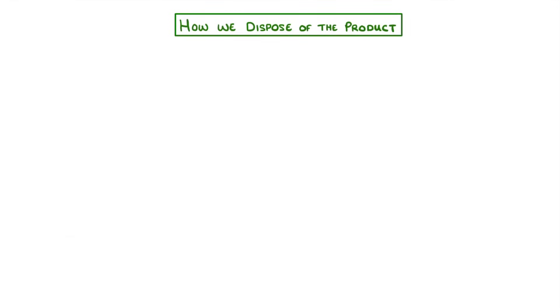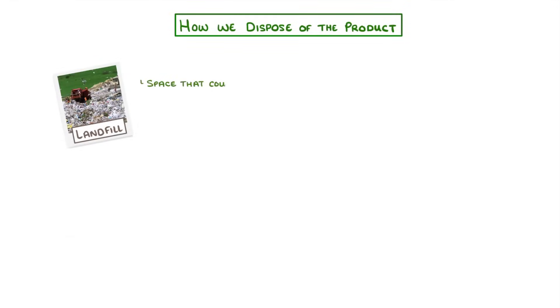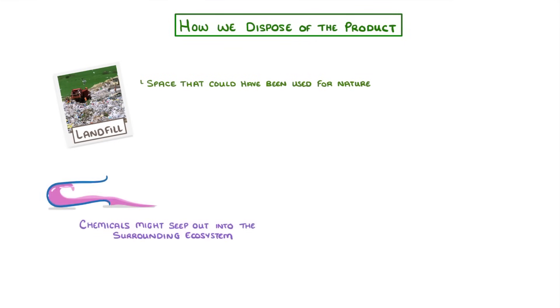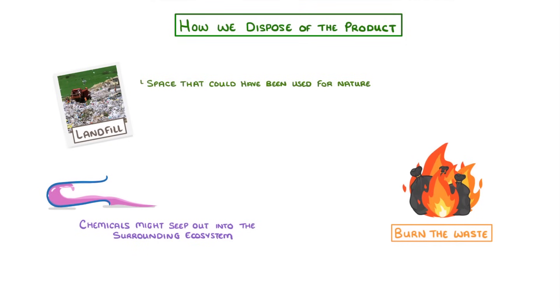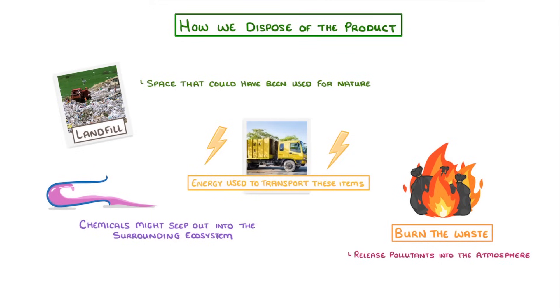Finally, we have to consider how we dispose of the product. If we place it in landfill, then we've taken up space that could have been used for nature, and chemicals might seep out into the surrounding ecosystems. If we burn the waste products, they might release pollutants into the atmosphere, and either way we have to consider the energy used to transport these items to landfill or to the incinerator.